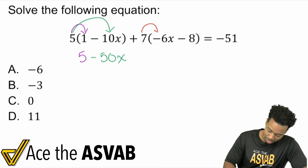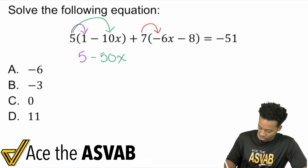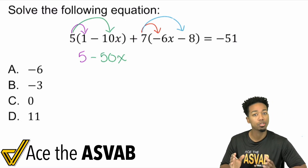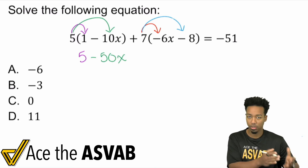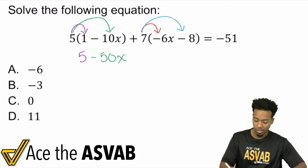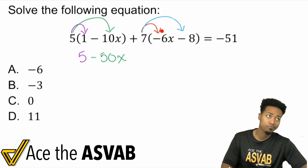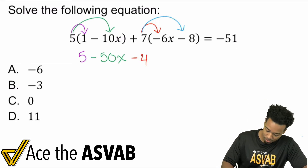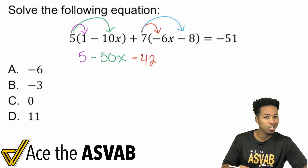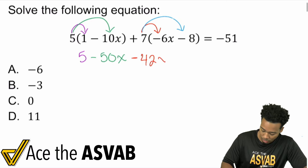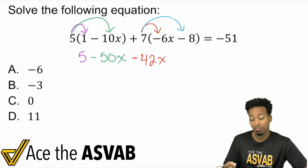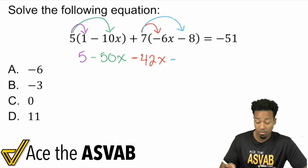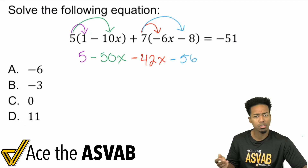From here, we see that we have seven times negative 6X, and also seven times negative eight. Same deal — distribute. Distribution just means make sure everything from the outside multiplies with everything from the inside. So seven times negative 6X: positive times a negative, that's going to be negative — seven times six is 42, so negative 42X. Then lastly, seven times negative eight: positive times a negative gives a negative, and seven times eight gives me 56, so negative 56.